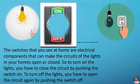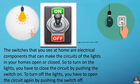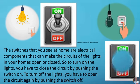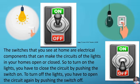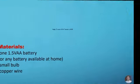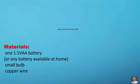So, to turn on the lights, you have to close the circuits by pushing the switch on. To turn off the lights, you have to open the circuit again by pushing the switch off. The activity that you are going to perform will clearly explain the conditions necessary to make a bulb light up.